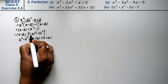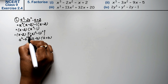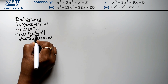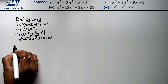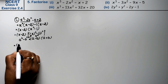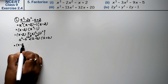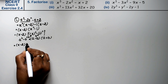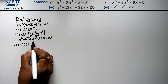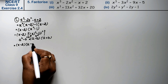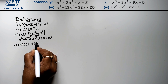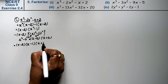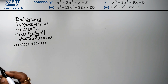Here a is x and b is 1. So the final factored form is x minus 2 times x minus 1 times x plus 1. That is the answer for the first part.